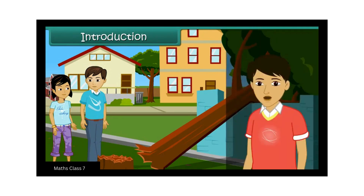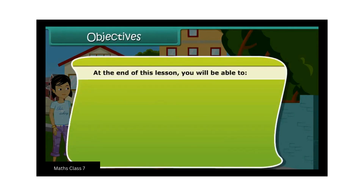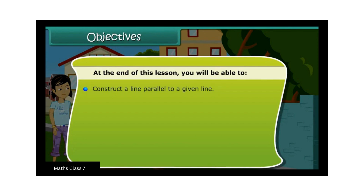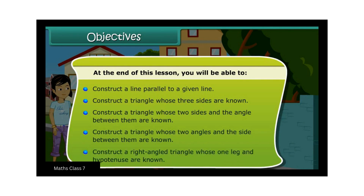In this lesson, you will learn to construct triangles. Objectives: At the end of this lesson, you will be able to construct a line parallel to a given line, construct a triangle whose three sides are known, construct a triangle whose two sides and the angle between them are known, construct a triangle whose two angles and the side between them are known, and construct a right angled triangle whose one leg and hypotenuse are known.